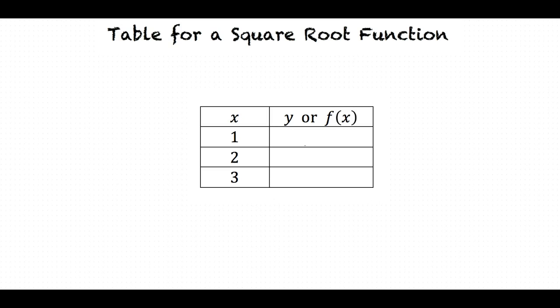The table for a square root function has two columns. In order to create this table, we solve the function for specific values of x, which are stored in the left column of the table. The values that we solve for are stored in the right column of the table. This strategy can also be used to create a table for any type of function.